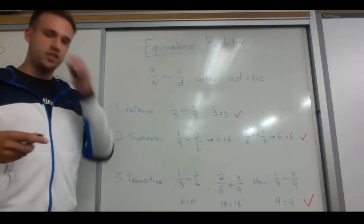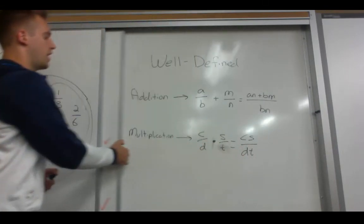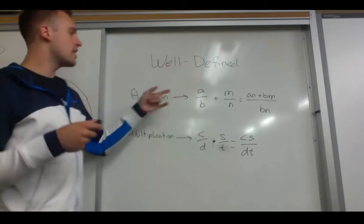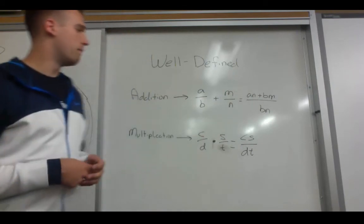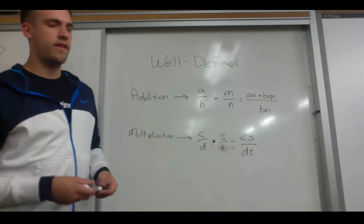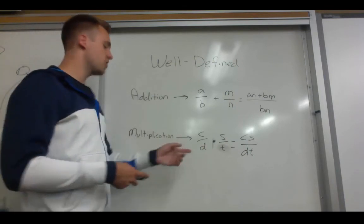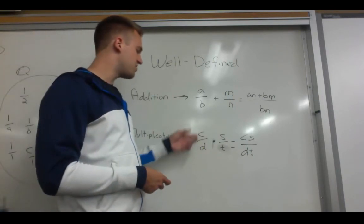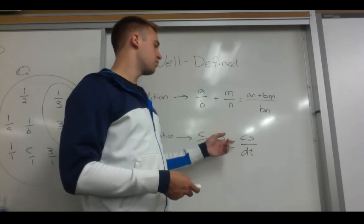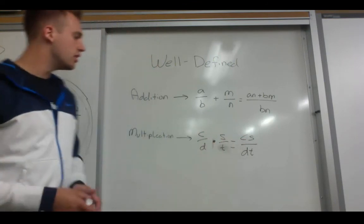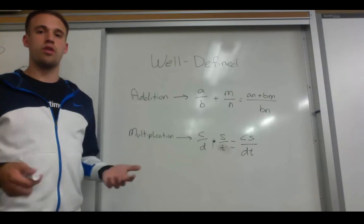The last thing we need to do is make sure addition and multiplication are both well-defined in our field of formal quotients. Addition is well-defined: for any A over B plus M over N, that equals AN plus BM all over BN, which comes from finding a common denominator. Similarly, multiplication is also well-defined: for any C over D multiplied by S over T, that equals C times S all over D times T. So both addition and multiplication are well-defined in our field of formal quotients.